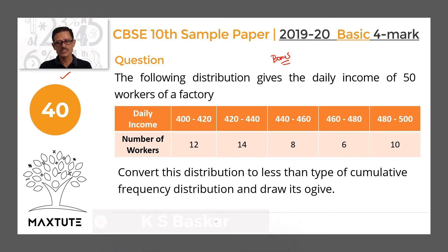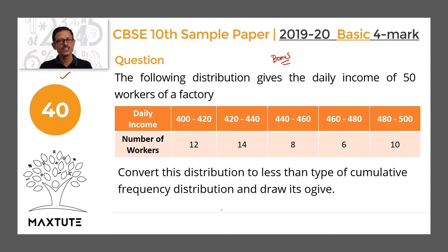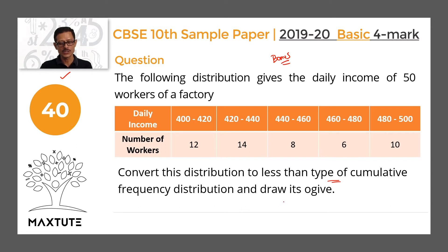The following distribution gives the daily income of 50 workers of a factory. Income has been given in five class intervals and the number of workers in each class interval is given. We need to do two things: one, convert this distribution to a less-than type cumulative frequency distribution, and two, draw its ogive.